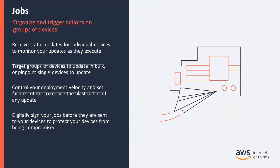Jobs enables you to organize and trigger actions on groups of devices, making it easy to manage device fleets. For example, you can get status updates from your devices, you can remotely update your devices, and you can also set rules or criteria around your jobs to ensure automated actions don't result in widespread failures, as well as digitally signed jobs to enable greater device security.